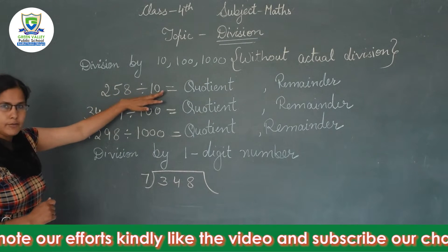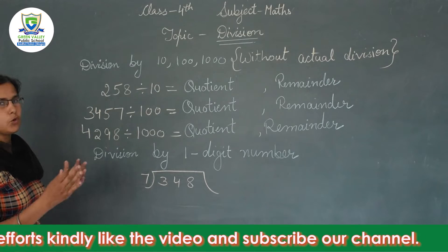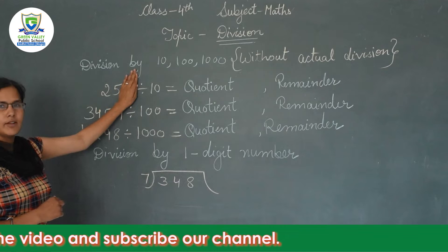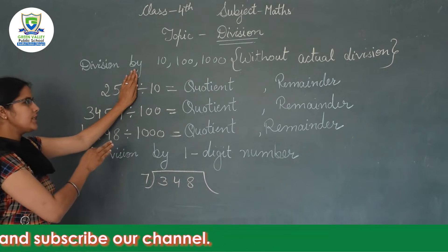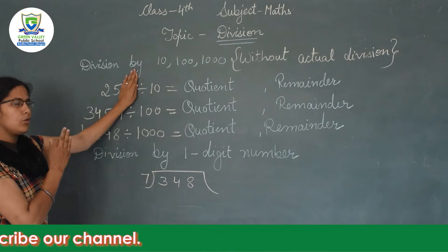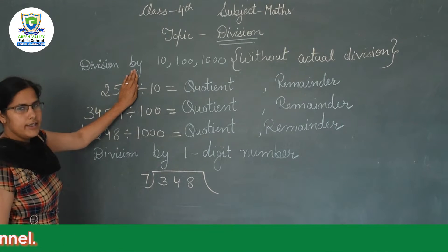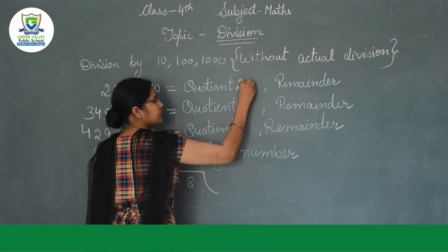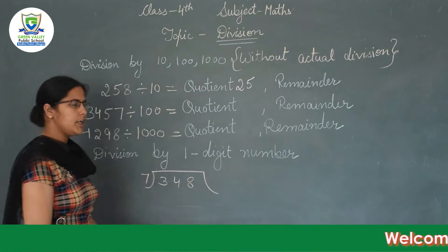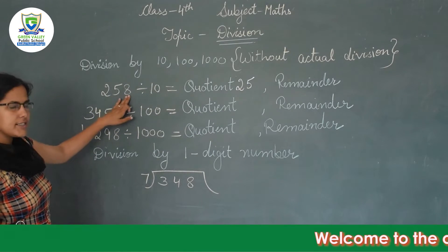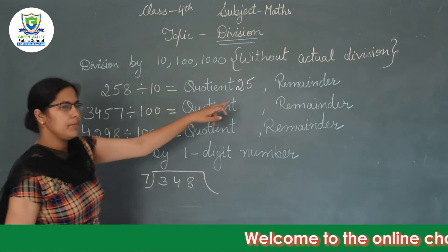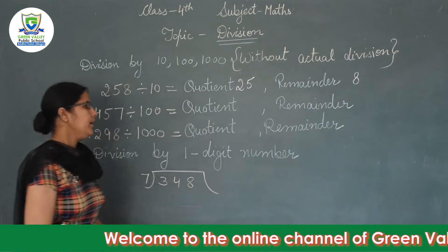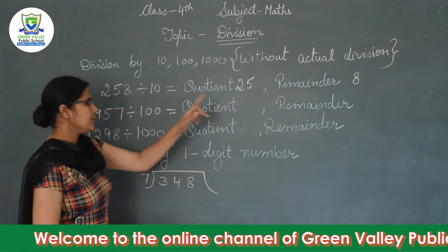When we divide by ten, we get the quotient by removing the one's digit. If we remove the one's digit, what is left is twenty-five. So the quotient is twenty-five, and the one's digit eight becomes the remainder. So eight is the remainder.